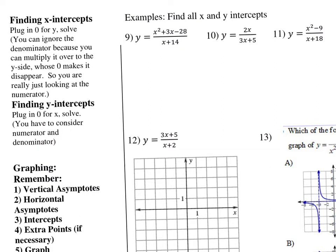Next up, problems 9 through 11 — finding the intercepts. To find the y-intercept, plug in 0 for all x's. For number nine that gives 0 squared plus 3 times 0 minus 28 over 0 plus 14, which simplifies to negative 28 divided by 14, giving us negative 2. So the y-intercept is the point (0, negative 2).